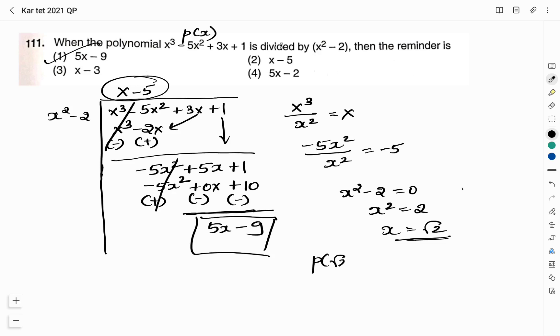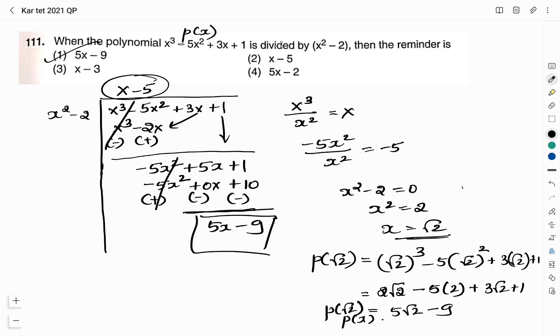We will find what is p of root 2. x cube will be root 2 cube minus 5x square is root 2 squared plus 3 root 2 plus 1. Root 2 cubed can be written as 2 root 2 minus 5 into root 2 square that will become 5 into 2 plus 3 root 2 plus 1. 2 root 2 plus 3 root 2 I can write it as 5 root 2 and minus 10 plus 1 it is minus 9. If I substitute this root 2 as x again I will get this as 5x minus 9. This is how you find the remainder and the right answer is option 1: 5x minus 9.